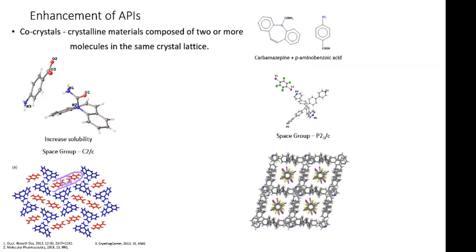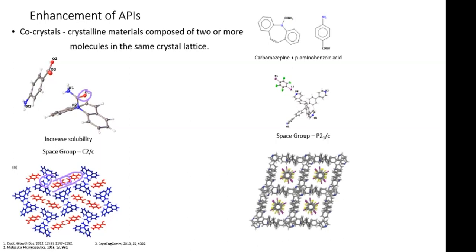The drug itself forms a dimer as well, between the NH2 and the carbonyl group on the drug. Hydrogen bonding plays a major role in stabilizing crystal structures of co-crystals involving carboxylic acids and amines. Hydrogen bonding is when a hydrogen attached to an oxygen or nitrogen interacts with an oxygen or nitrogen on another molecule — it's a very predominant intermolecular force used in forming co-crystals.